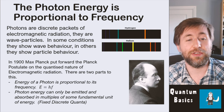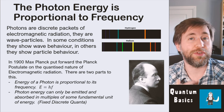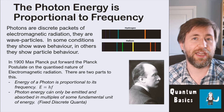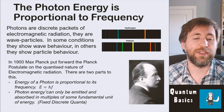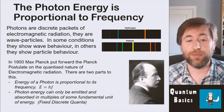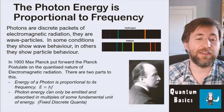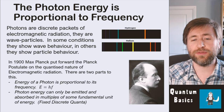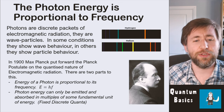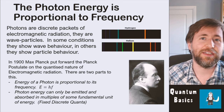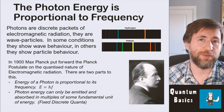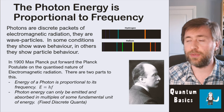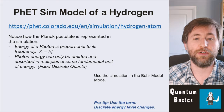The two parts of the Planck postulate are: first, the energy of a photon is proportional to its frequency — the key equation is E equals hf: energy of a photon equals the Planck constant multiplied by its frequency. Second, photon energy can only be emitted and absorbed in multiples of some fixed fundamental unit of energy — fixed discrete quanta. That's where the word 'quantum' comes from. All of quantum physics is about these fundamental units of energy that we only get multiples of.